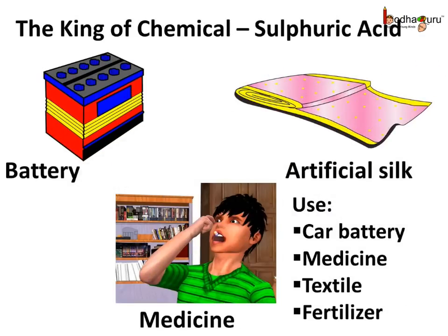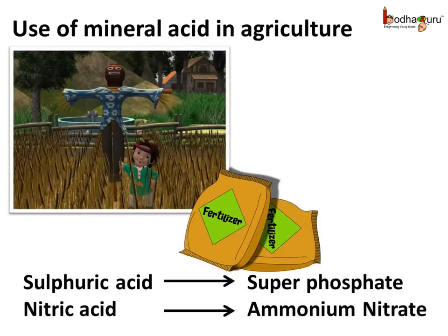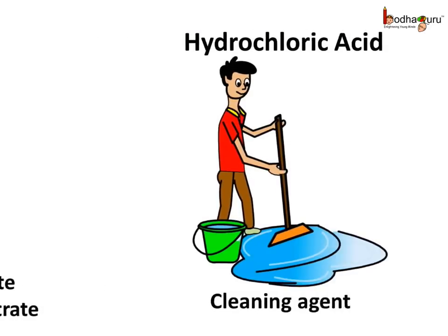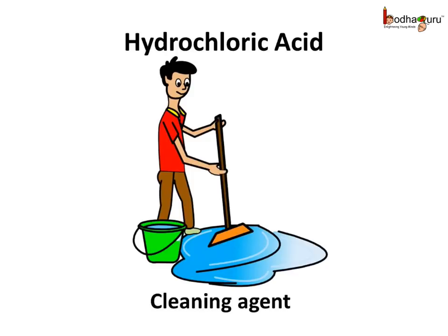The mineral acids are not found in living things, but they are not harmful or useless — mineral acids are useful in many ways. Sulfuric acid is often called the king of chemicals. It is used in manufacturing car batteries, medicines, and artificial silk. Sulfuric acid is also used to produce the fertilizer super phosphate. Nitric acid is used to make ammonium nitrate, and hydrochloric acid is used in cleaning processes — from cleaning sinks to cleaning huge boilers in factories.